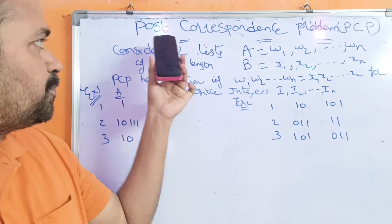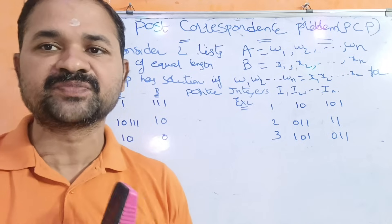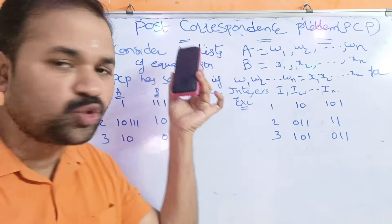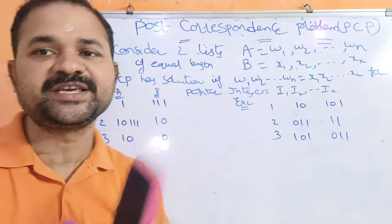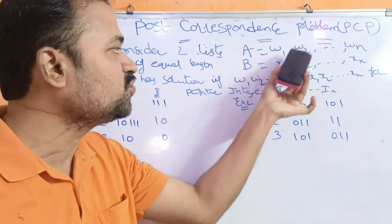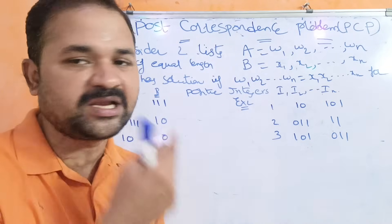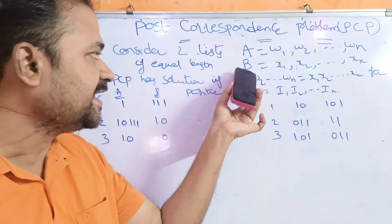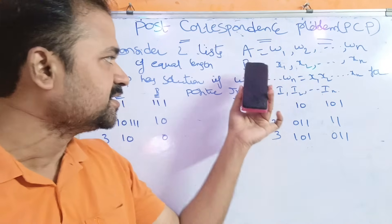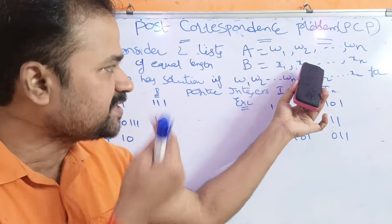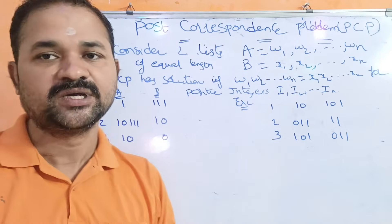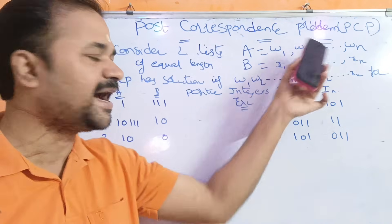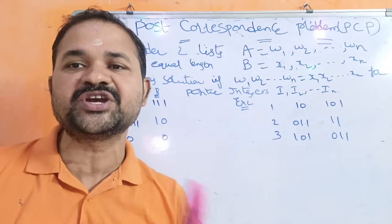Now let's see the Post Correspondence Problem — in short, we can call it PCP. Consider two lists A and B. A is equal to W1, W2, so on WN, so A list contains a number of strings. B list also contains a number of strings: B is equal to X1, X2, up to XN. So here we have two lists A and B, where both contain a collection of strings.